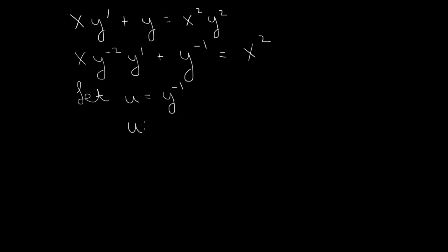And then the derivative here, u prime, becomes minus y to the minus 2 times y prime. And we see that we have the y to the minus 2 times y prime here, and the y to the minus 1, which is u here. So substituting in,